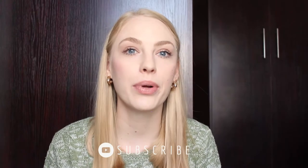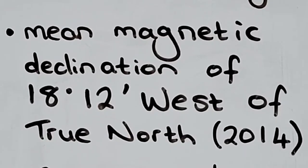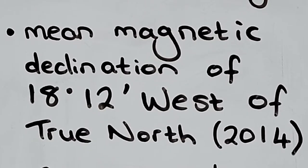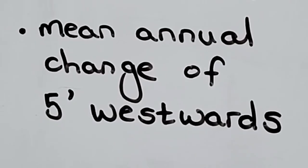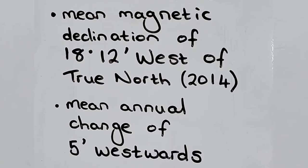Let's work through an example so that you can see how these steps actually apply in reality. Our mean magnetic declination is 18 degrees and 12 minutes west of true north, and this was recorded in the year 2014. Another piece of information we find on the map is the mean annual change, recorded as five minutes westwards.